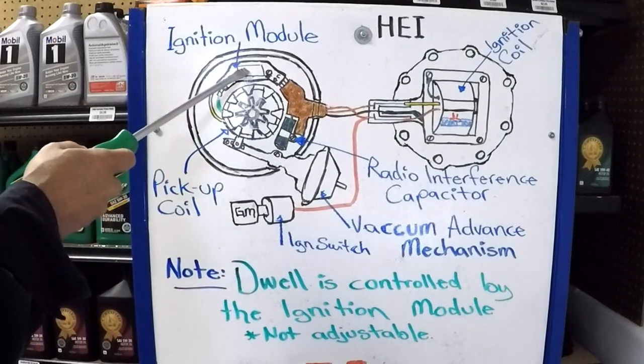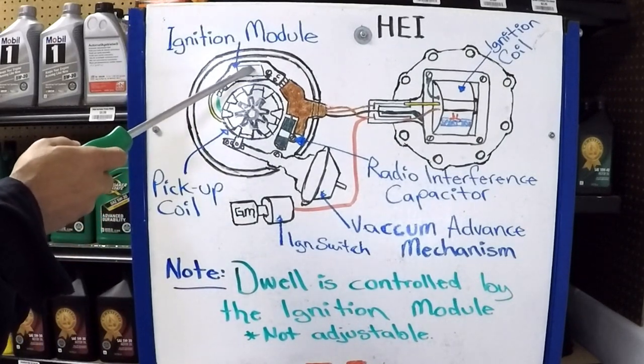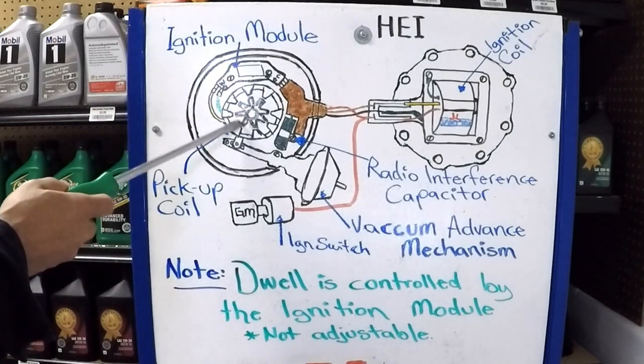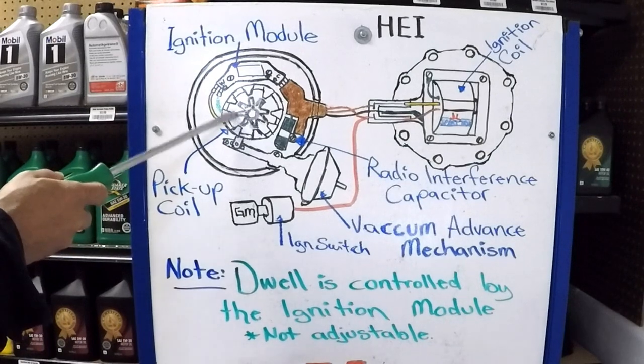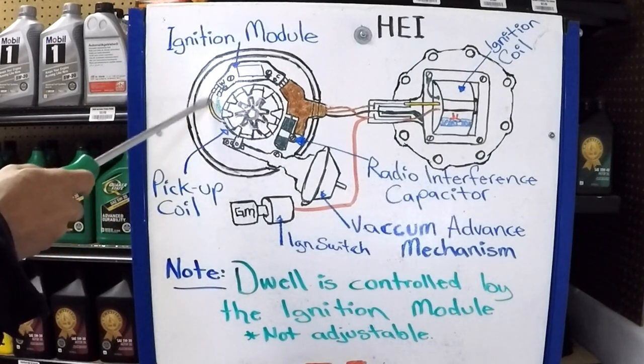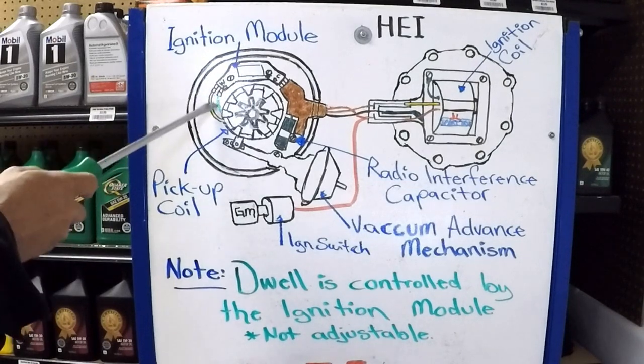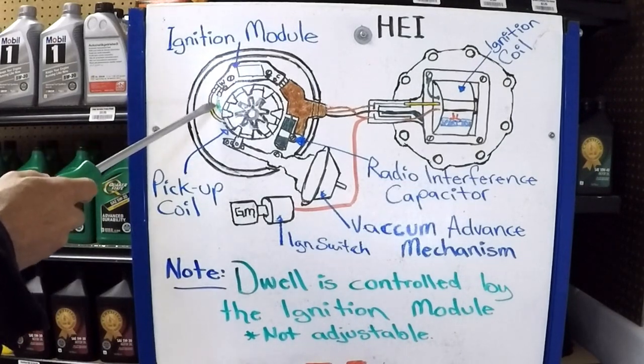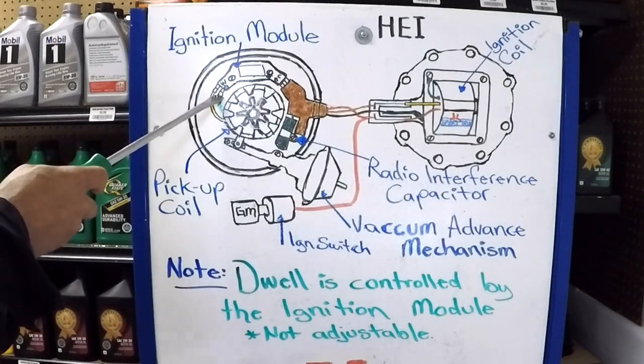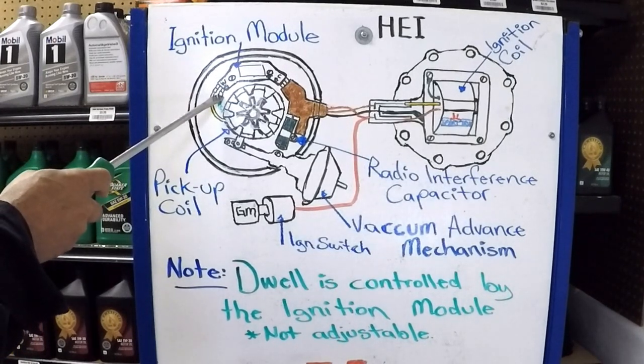Most of the large auto parts stores have a machine inside that will test the ignition modules that can do it for you for free. The pickup coil, you can test it yourself with an ohmmeter. The resistance of the pickup coil should be in between the two wires. You disconnect them, obviously, so it's not affected by the module.